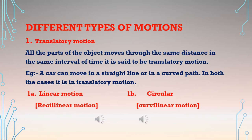If all parts of an object move through the same distance in the same interval of time, it is said to be translatory motion. For example, a car moving in a straight line or in a curved path — in both cases it is translatory motion. This can be divided into two types: linear motion and circular motion.